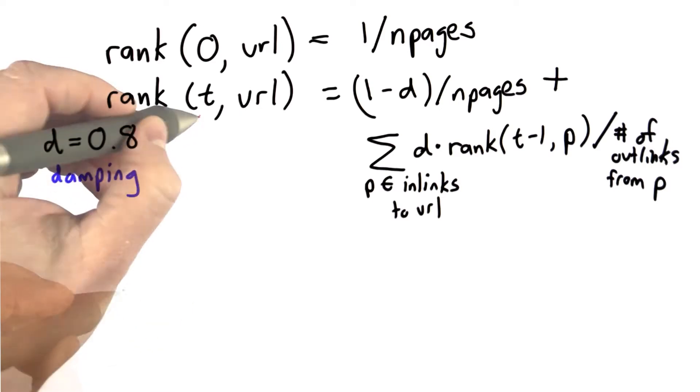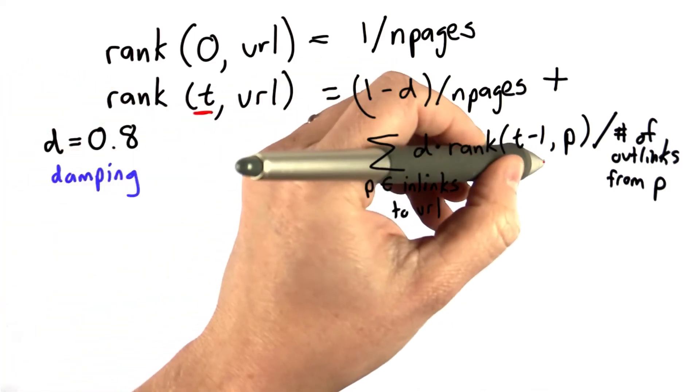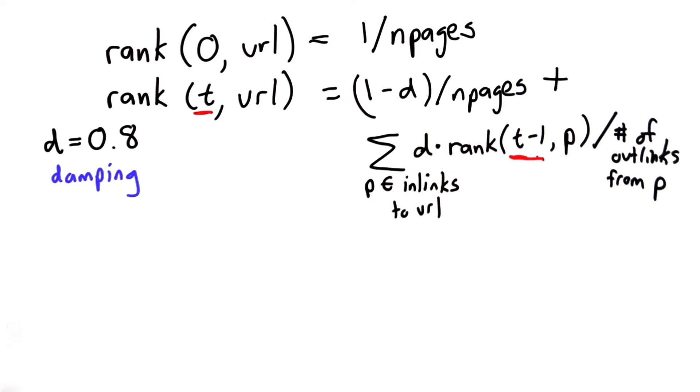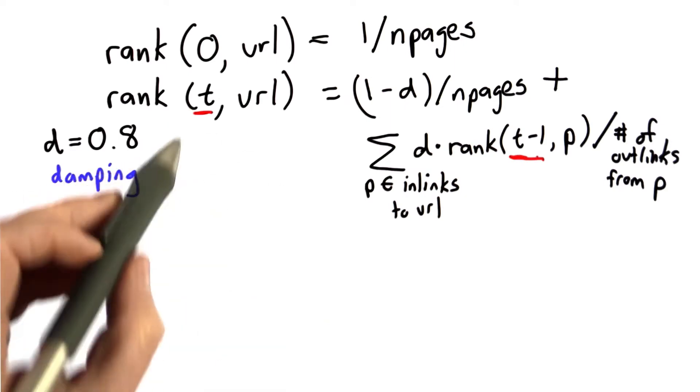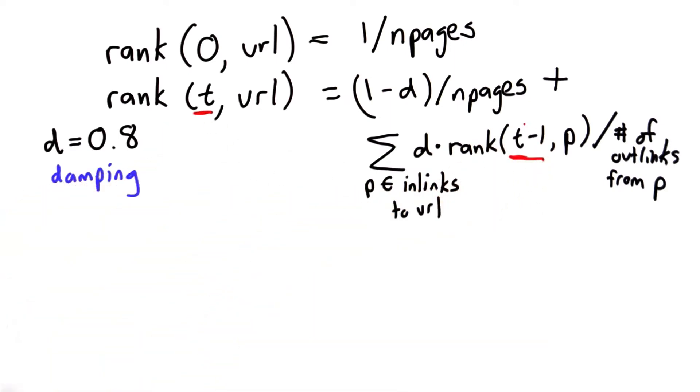And the first thing we're going to do is simplify it, is observe that we have this t parameter, but we only ever use the very previous one. So we don't really need to keep track of the rank value for all the different t values. We just need to keep track of the previous one.